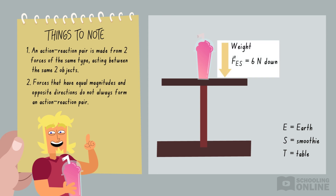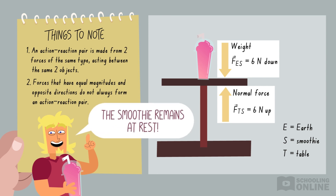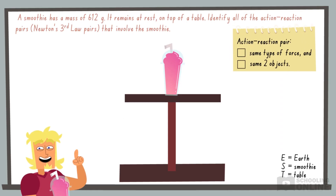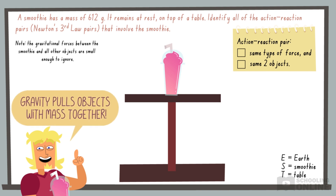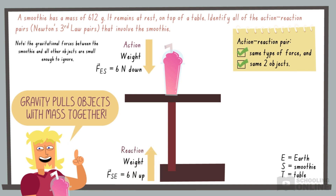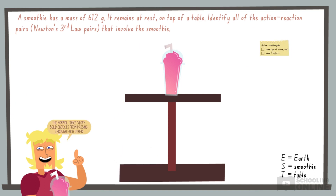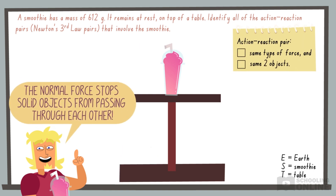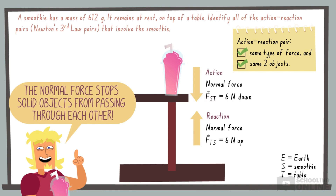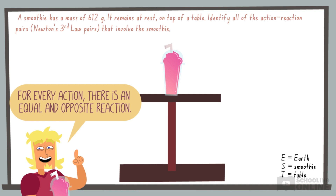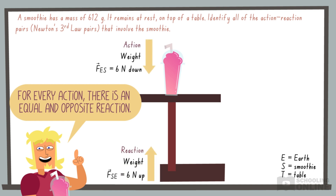In this scenario, the weight and normal forces cancel out, allowing the smoothie to remain at rest in a state of static equilibrium. Now, let's try the question again. The first interaction is between the smoothie and Earth: the Earth pulls the smoothie down, and the smoothie pulls the Earth up. The smoothie and table form a different pair: the table pushes the smoothie up, and the smoothie pushes the table down. Overall, we have one pair of weight forces and another pair of normal forces.